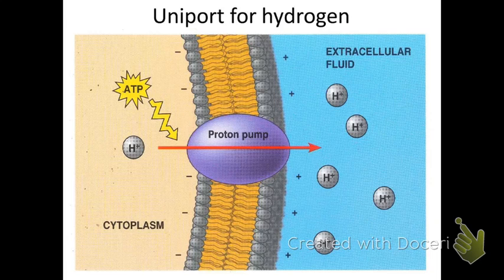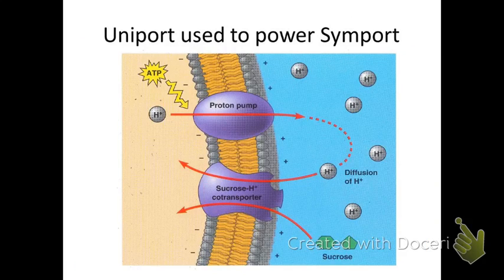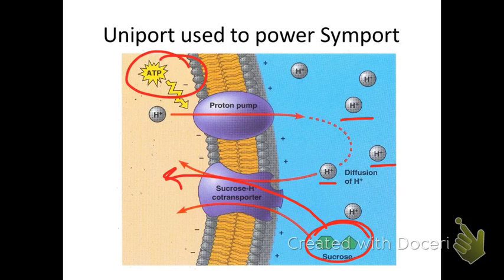Proton pumps are used all over the cell to move hydrogen ions against their gradient from low to high concentration, creating a positive space outside of the cell and a negative inside. That's a common theme with active transport — they create both a voltage gradient and a concentration gradient because they're moving ions. Here we have a uniport, that same proton pump, using energy from ATP, creating a gradient where there is more hydrogen ion outside the cell than inside.